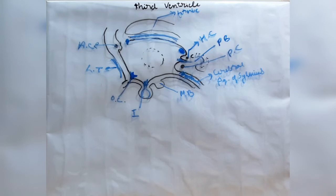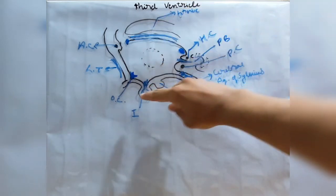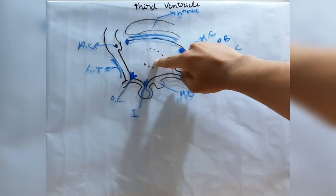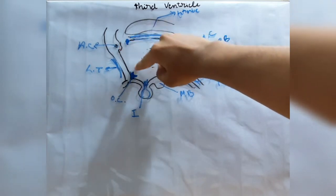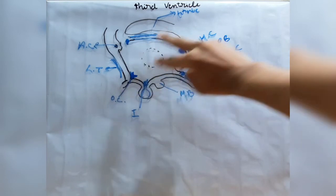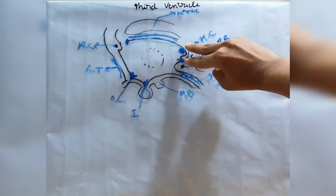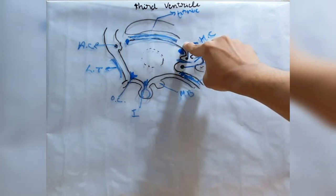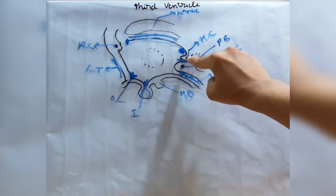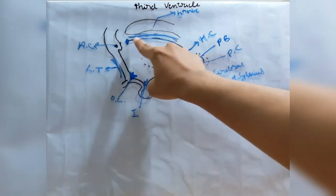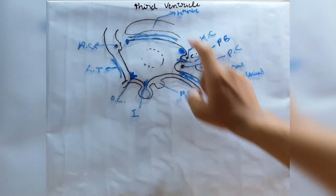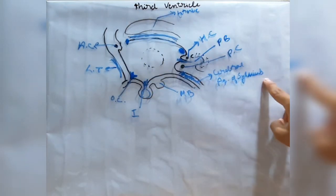To summarize the third ventricle: it has a roof, floor, anterior wall, posterior wall, and lateral walls. It has four recesses: supraoptic and infundibular placed anteriorly, and suprapineal and pineal placed posteriorly. It has two communications with other ventricles — the foramen of Monroe and the cerebral aqueduct of Sylvius.